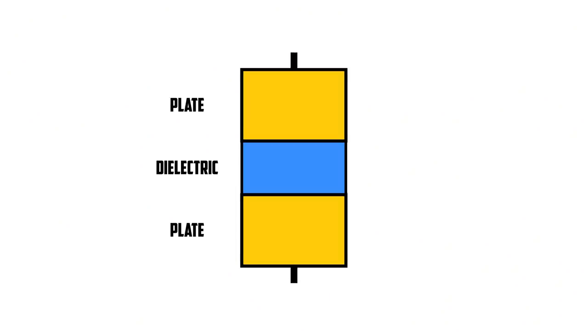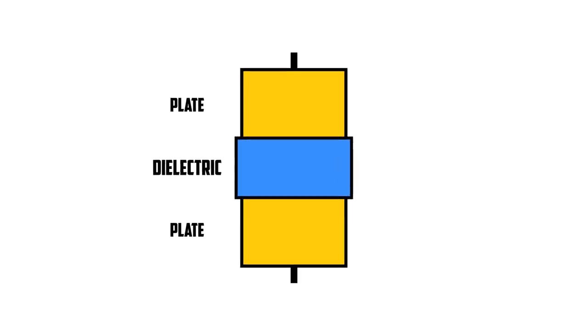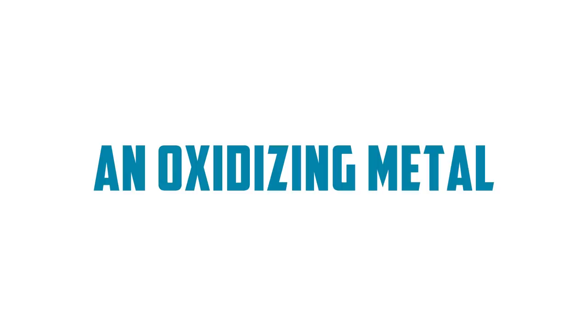Capacitors have two terminals. Inside there are two conductive metal plates separated by an insulating layer called a dielectric. The dielectric can be made of glass, ceramic, plastic film, paper, mica, or an oxidizing metal.